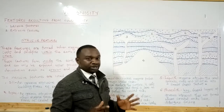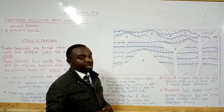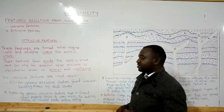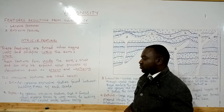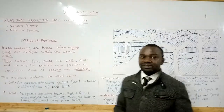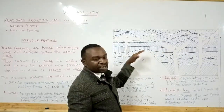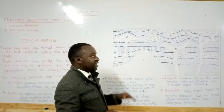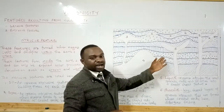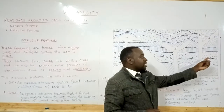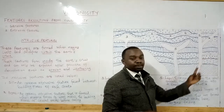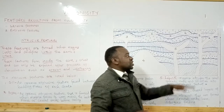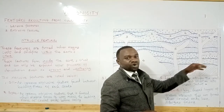We are going to start with the sill. A sill is an igneous intrusive feature that is found between the bedding planes of rock strata — that is, the horizontal layers of the crustal rocks. In the diagram on the whiteboard, the horizontal rock strata are indicated in blue. The sill, labeled as number one, is formed when magma intrudes through the crustal rocks before spreading horizontally along the bedding planes to cool and solidify.